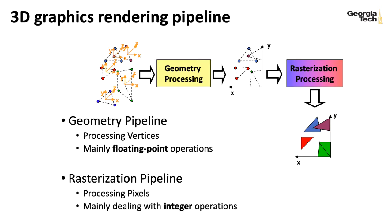We'll be writing two kinds of shader code in this class: vertex shaders that process these three-dimensional vertices, and pixel shaders, also known as fragment shaders, that decide on the final color of the pixels. Vertex shaders process each vertex individually and don't create new vertices. There are other kinds of shaders called geometry shaders that can create new vertices, and compute shaders that are more general-purpose GPU programming, but we won't be looking at those in this class.